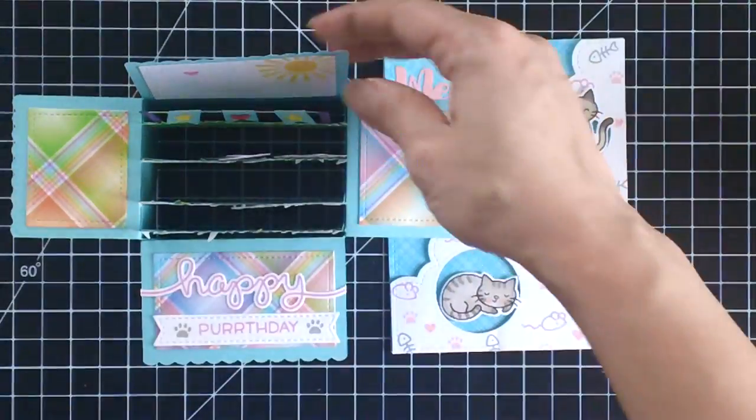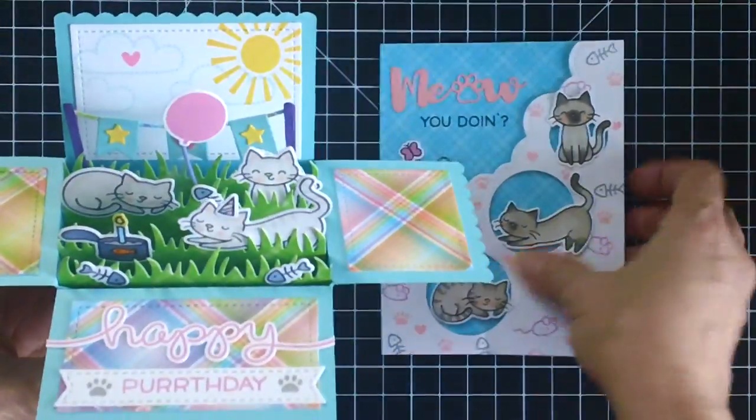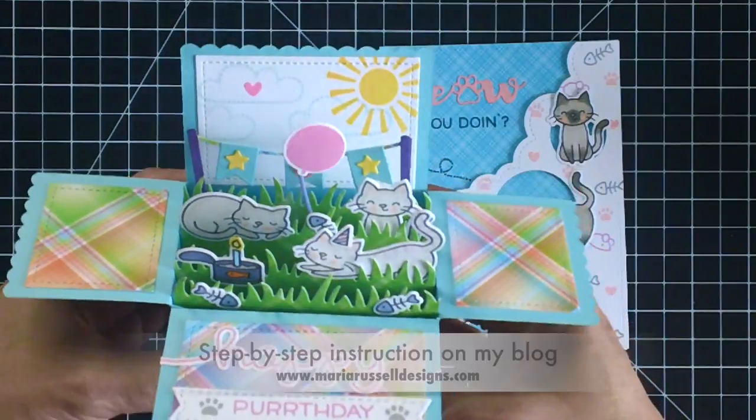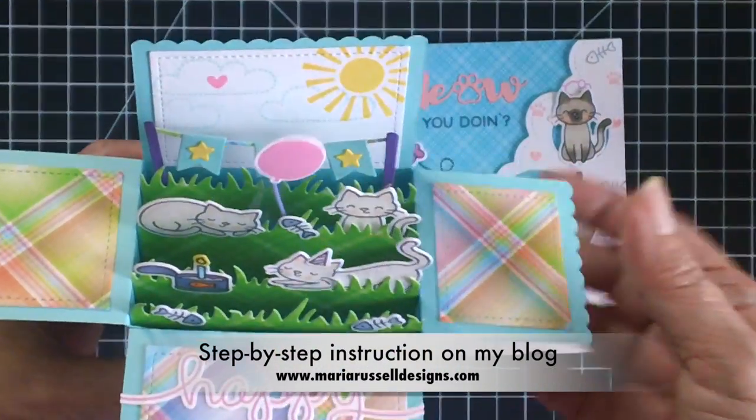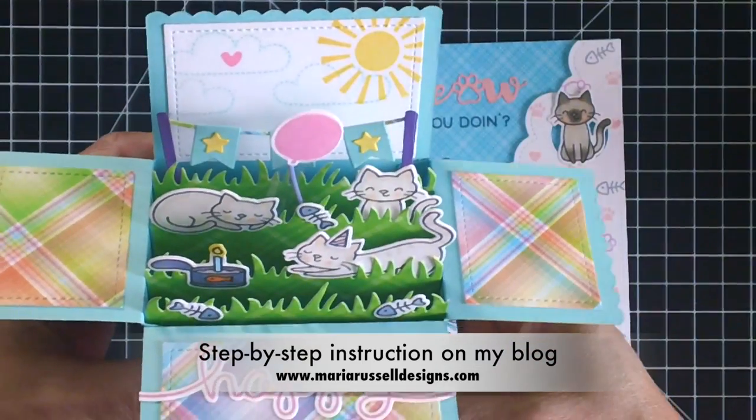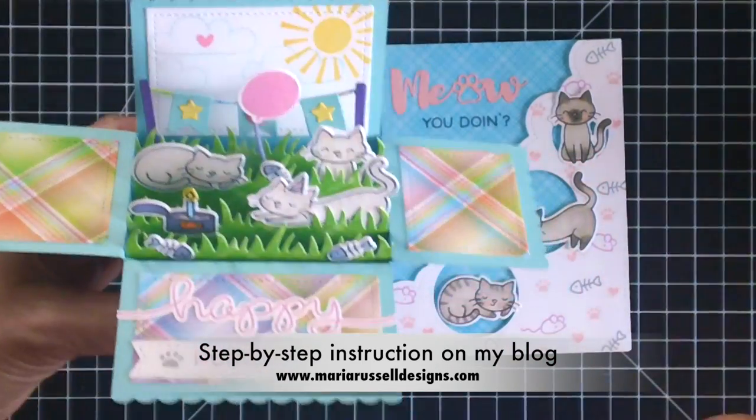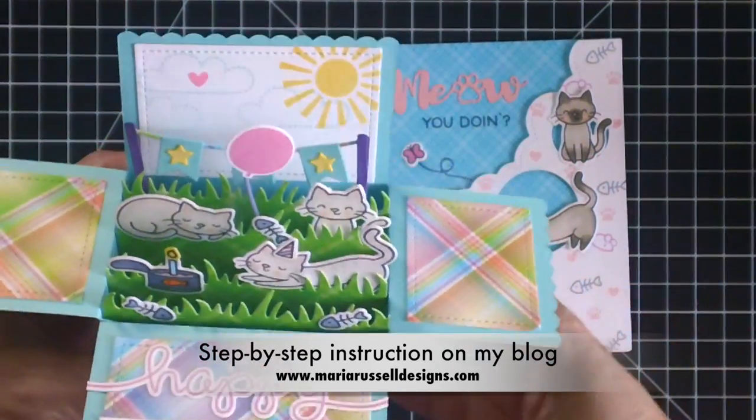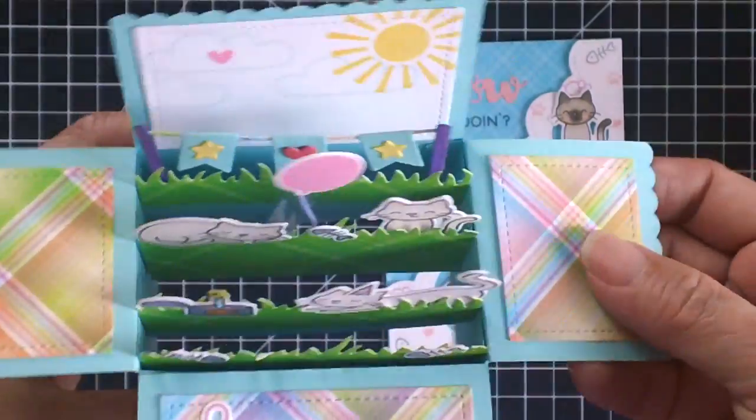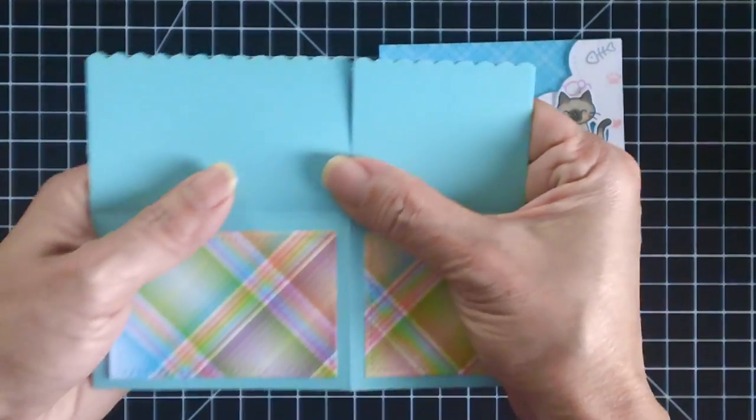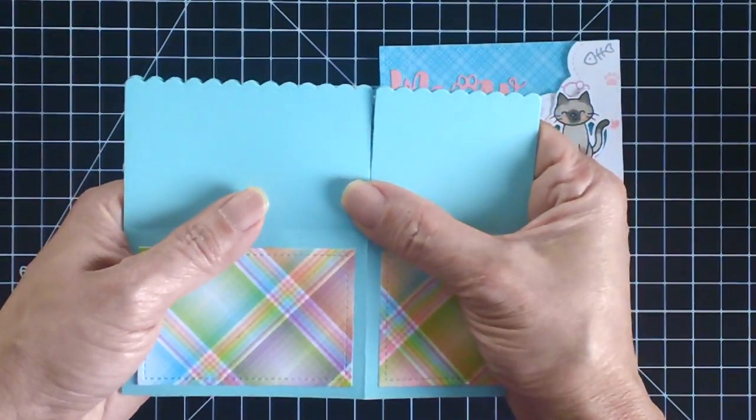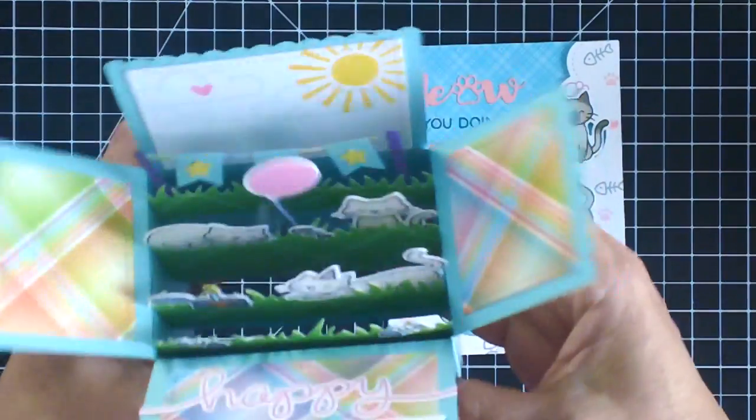And here are the two projects that I have made. So for this box card, even though I am not going to share with you a process video for this, I have a step-by-step instruction on my blog and I will put a link in the description box below if you would like to see that. Really love how this one turned out. Of course it's A2 size so you can fit it in a standard A2 size envelope.